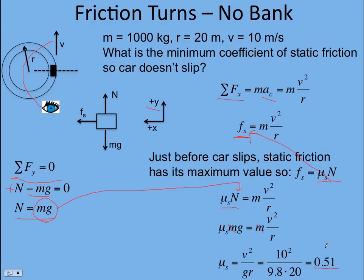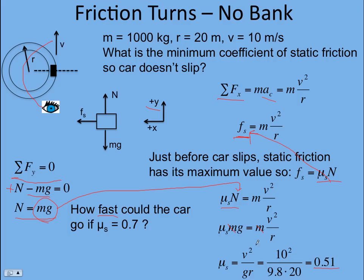If you want to try this problem on your own, keep everything the same except μ is now 0.7, and solve for the speed of the car — the fastest it could go without slipping. Don't just use this equation directly. Start with the free-body diagram, apply Newton's second law, derive the same relationship, and then solve for v. Good luck.